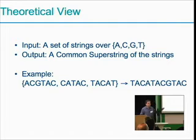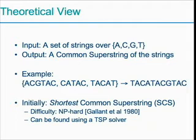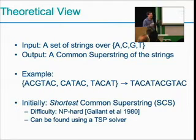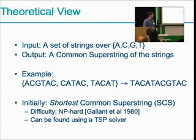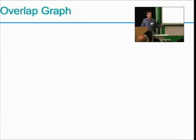There are lots of valid superstrings, so which one do we want? Initially, people thought they would want the shortest common superstring — the shortest genome that would explain all the strings we've obtained. There are two problems with this: it's NP-hard, which makes theoretical people uneasy. But it can be solved using a traveling salesman problem (now called traveling salesperson problem) solver, via something called the overlap graph — a graph-theoretic model for sequence assembly.